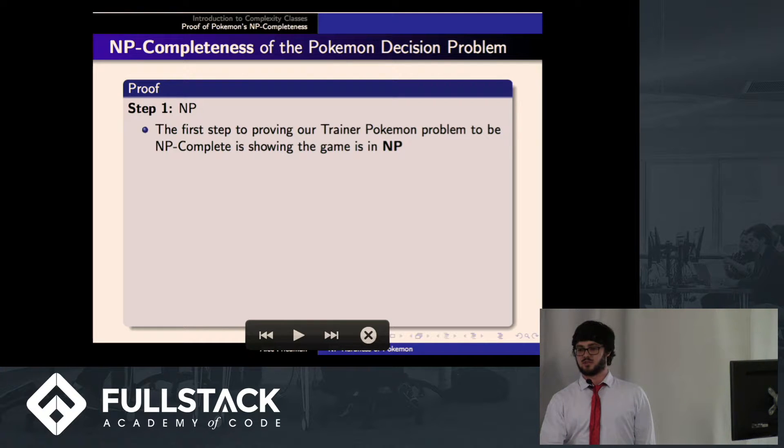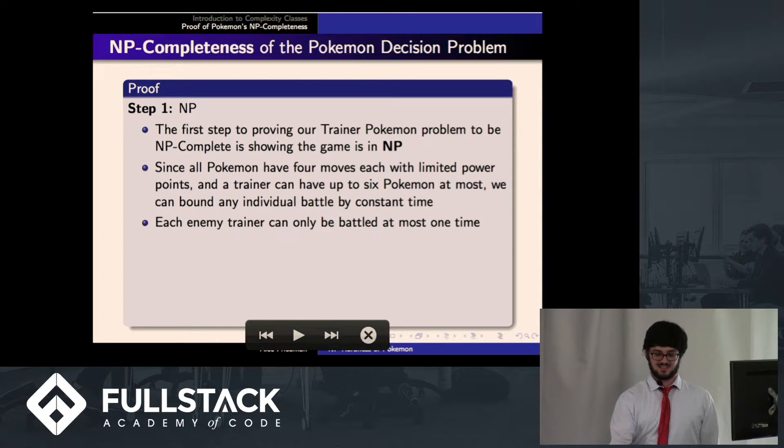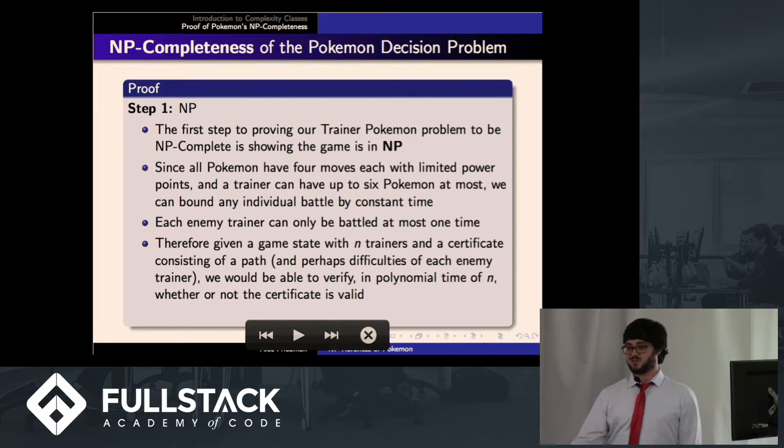So there's two steps that go into proving this. First, we have to prove that this problem is in NP. And then we're going to have to prove that it is NP-hard. So since all Pokemon only have four moves, and they have limited power points, and you can have at most six Pokemon, and an enemy trainer can have at most six Pokemon, we can bound any individual battle with another trainer by constant time. Enemy trainers can only be battled at most one time, and then they become inactive. Therefore, if we have a game state with n enemy trainers, and we were given a certificate consisting of a path through that game state, we would easily be able to check that path in polynomial time of n, the number of trainers, because each trainer's battle is constant time. So therefore, Pokemon is in NP.